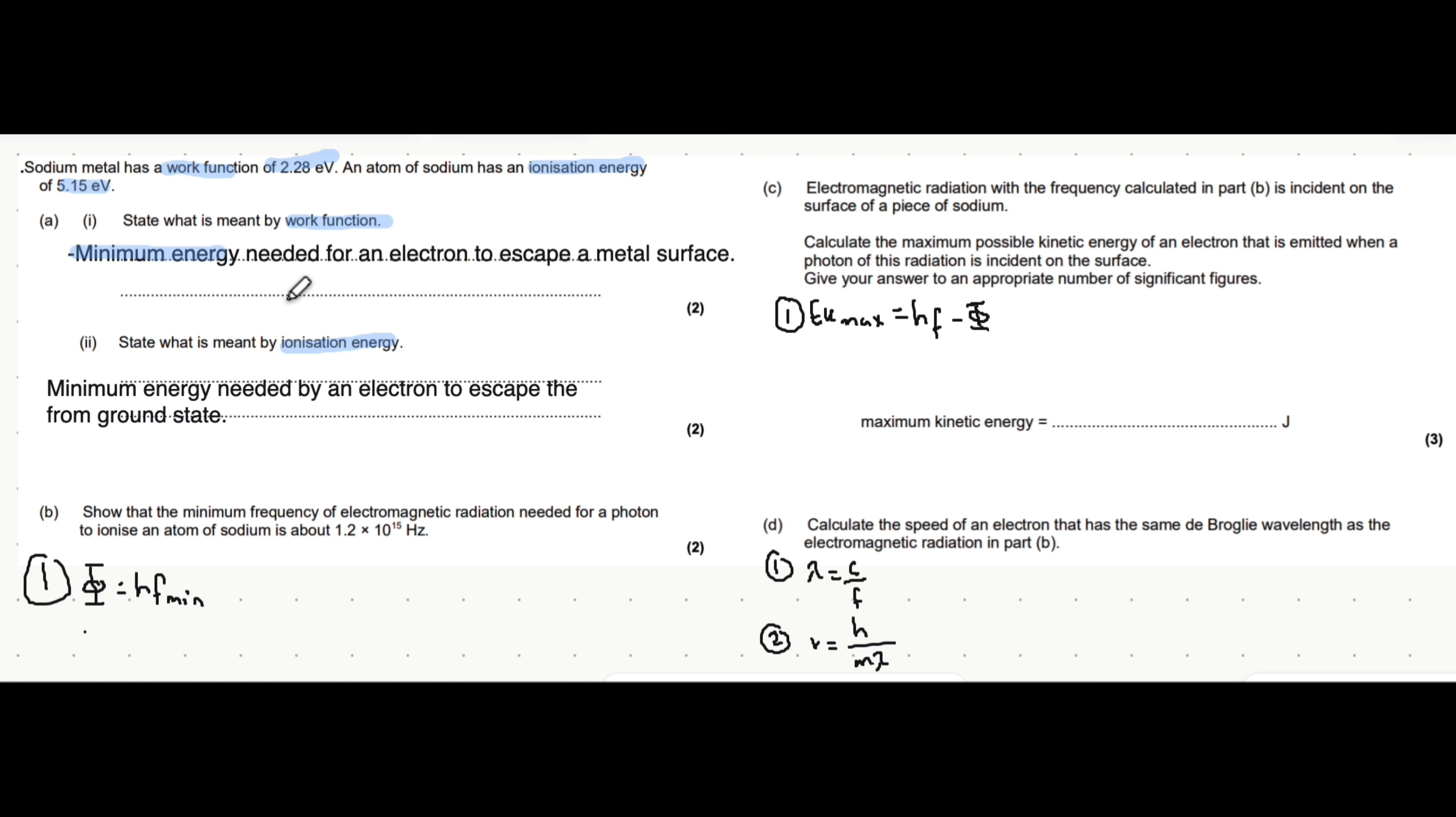Work function is the minimum energy needed for an electron to escape from a metal surface. Ionization energy is the minimum energy needed for an electron to escape from its ground state. If we think about an atom's outer shells of electrons, they can be at different energy levels.